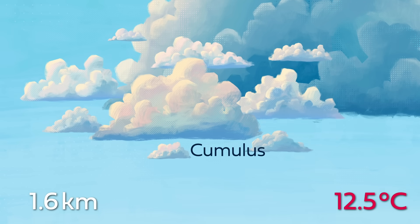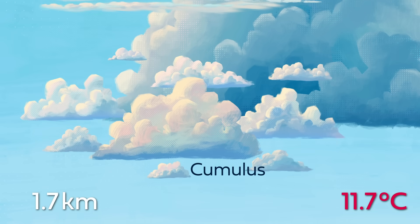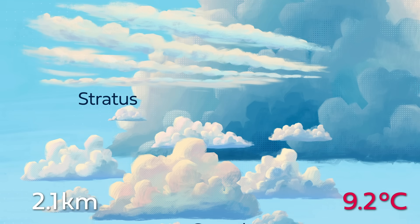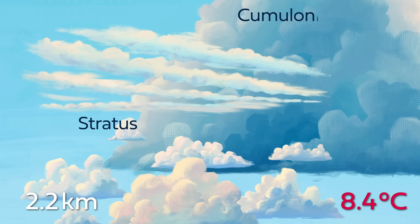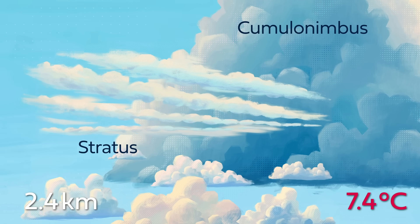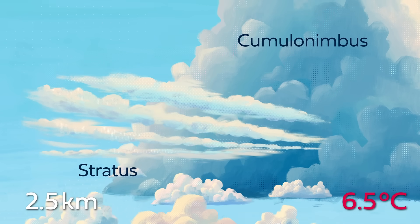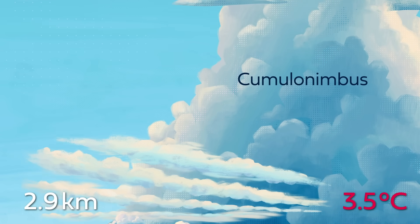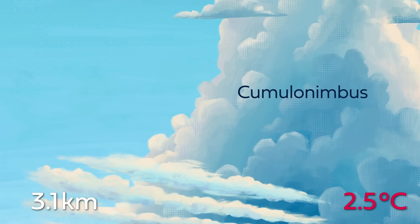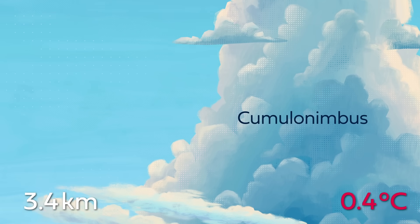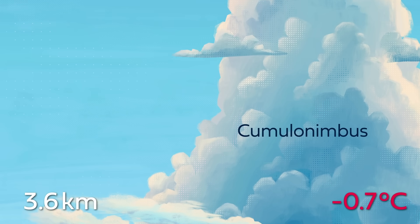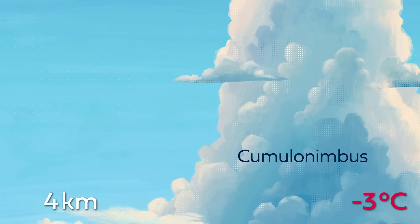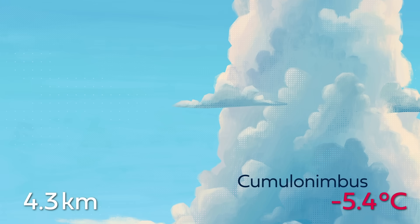First, fluffy cumulus and flat stratus clouds — basically high fog. Somewhere between the two are cumulonimbus clouds, thunderstorm clouds with flat bottoms but fluffy and towering above. Different clouds form under different conditions. Depending on the pressure, humidity, and temperature, distinct cloud types can form.